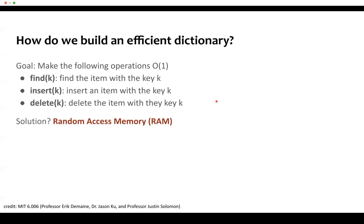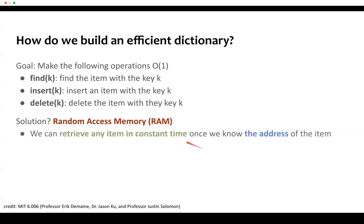The solution is we're going to use random access memory, also abbreviated as RAM. When we use RAM, we can retrieve any item in constant time once we know the address of the item — that is how the RAM hardware works. That means if we use random access memory, then O(1) is achieved.